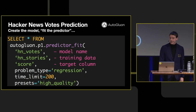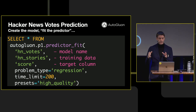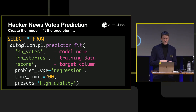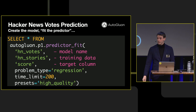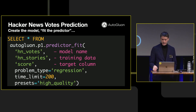Now we're going to create a model. We have a new table-returning function called predictor_fit that exists under the AutoGluon database. We give it the name of the model, the training data — the table name of where we just loaded — and the target column we want to predict, called score. We'll say it's a regression problem, give it 200 seconds to train the model, and request a high-quality model.